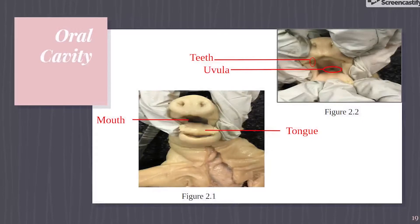The digestive system starts with the oral cavity where the food enters. In Figure 2.1, you see the mouth where the food first enters. Then mechanical digestion starts with the teeth, pictured in Figure 2.2. Once the food has been broken down by the teeth and digestive enzymes have been added, it is called a bolus. The digestive enzymes come from the saliva and the salivary glands, which are not pictured here because they are located in the head of the pig, which was not dissected.